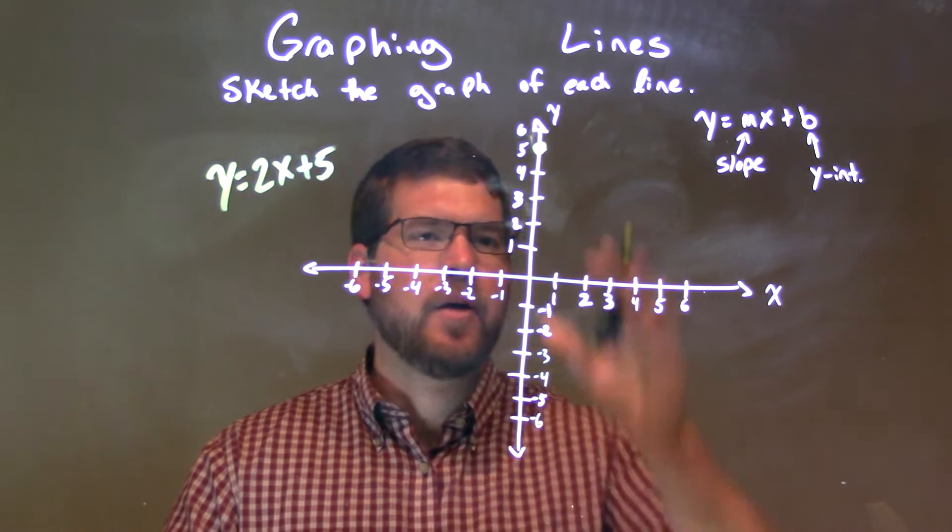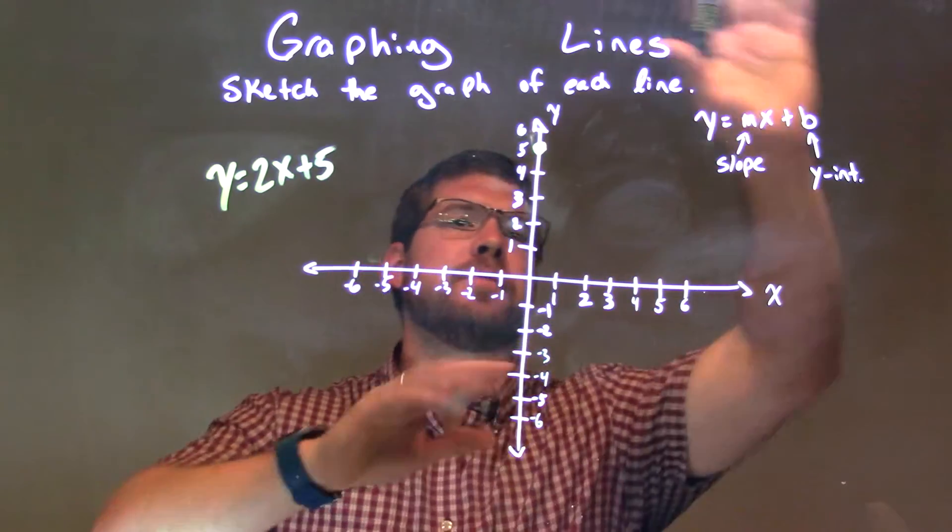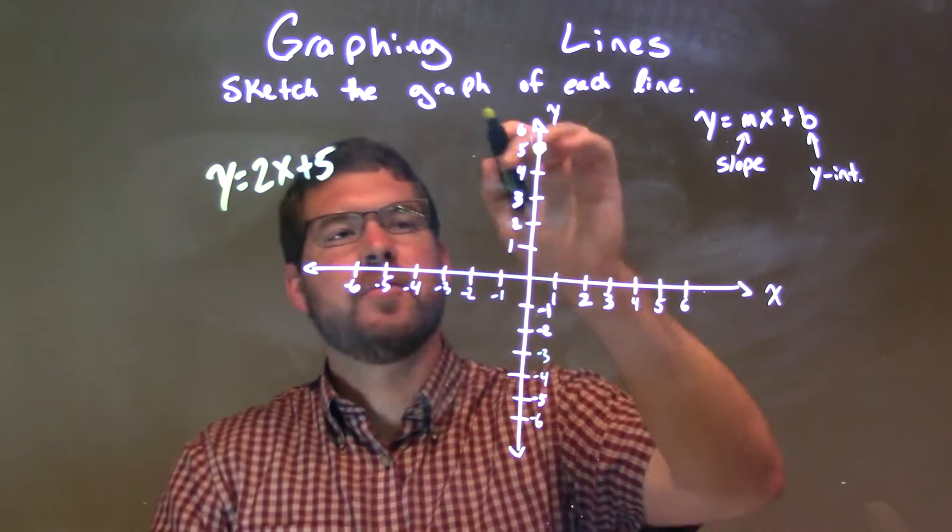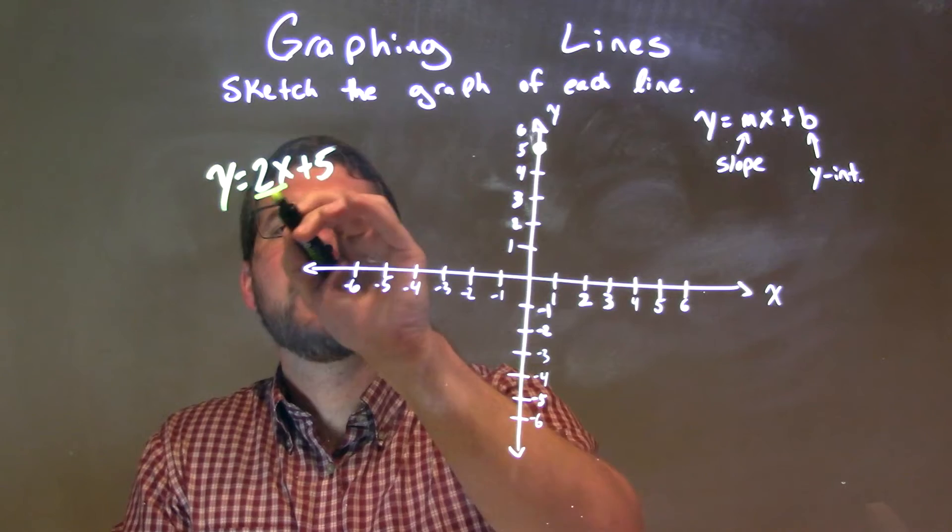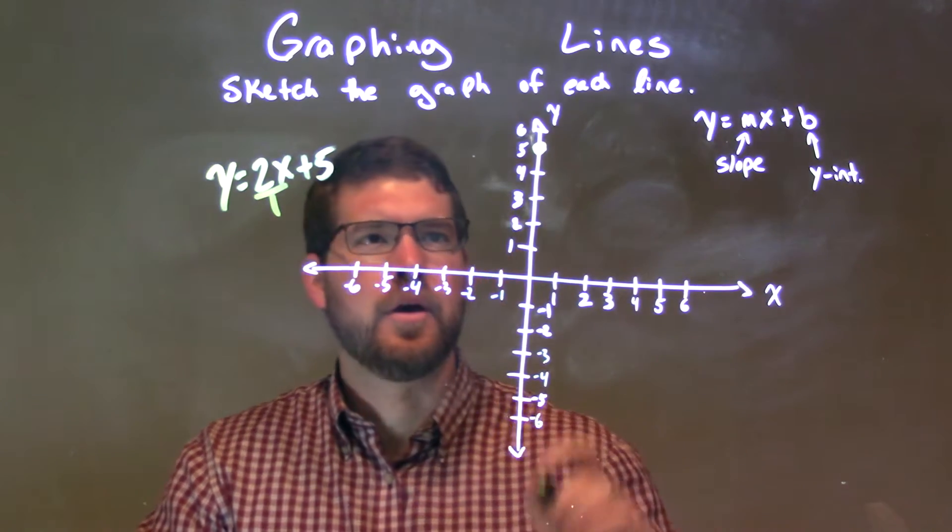Now, here's the tricky part. My graph is kind of limited. Now, if I went on, if I had it really large, I'd just go up 2 over 1, right? Because we know our slope is 2 over 1.